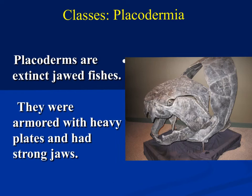Some classes of animals are extinct, with no known living examples. One of these is the placoderms. The placoderms are extinct jawed fish believed to have had a very thick armored plate system and very strong jaws — that's what we know about this extinct class of animals.